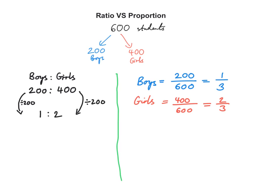Can you see the difference between a ratio and proportions? In a ratio, the quantity of one category is compared to the quantity of another category. Here we are comparing the quantity of boys to the quantity of girls. This comparison of categories is simplified to give us a quantitative relationship — for every one boy, there are two girls.